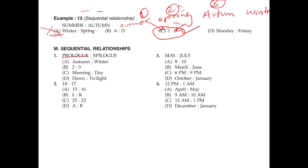Prologue starts at the beginning of a book — it's the introduction — and epilogue is at the conclusion, like ending comments. So it's something that starts and something that ends. The right answer is dawn and twilight: dawn is when the sun rises and twilight is when the sun sets.